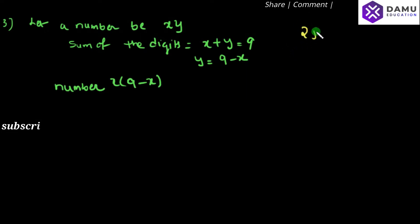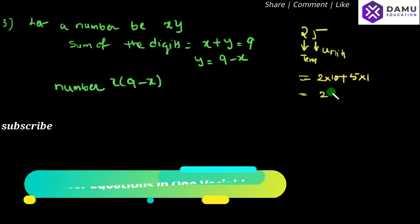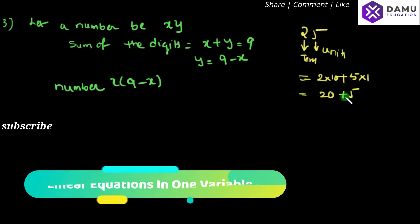Let's take the example of 25. Here 5 will be the units place and 2 will be the tens place. We can write this in expanded form as 5 into 1 plus 2 into 10, which gives us 20 plus 5, that is 25.